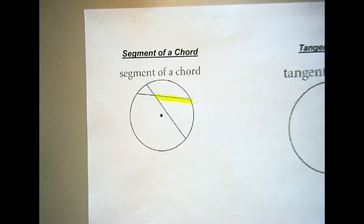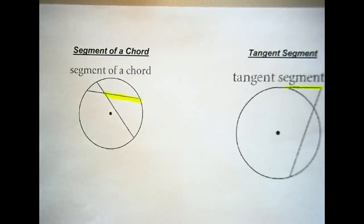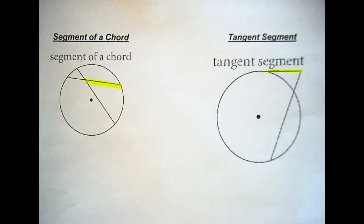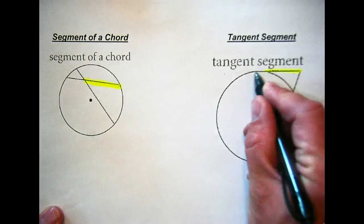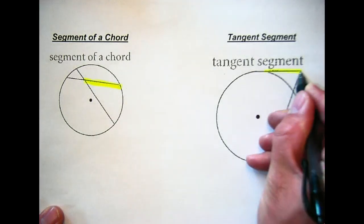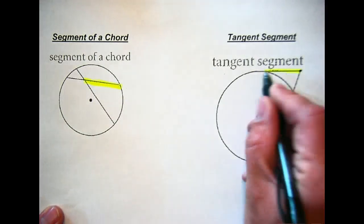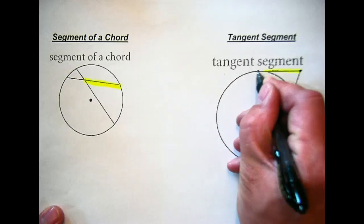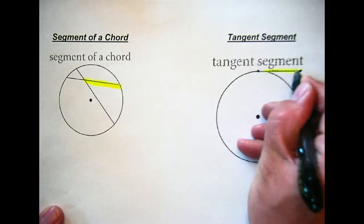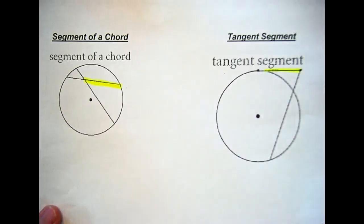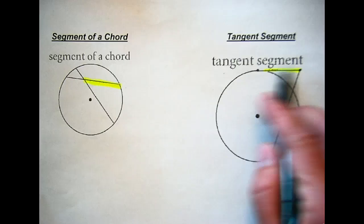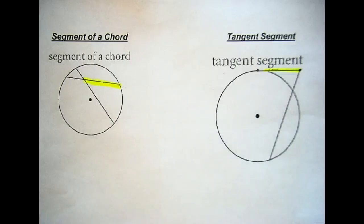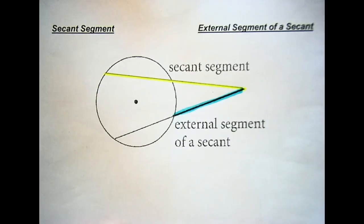We then have a tangent segment. A tangent segment is where you have a tangent, and from your point outside the circle to your point of tangency on the circle is that tangent segment. That highlighted piece is called your tangent segment. Give you a minute to copy.